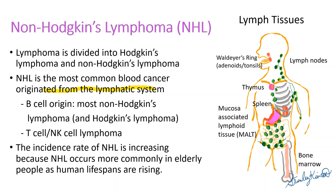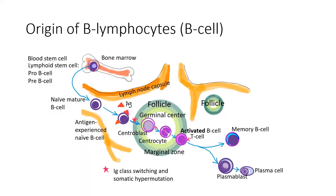Non-Hodgkin's lymphoma is originated from the lymphatic system. They are either of B cell origin or T cell and NK cell origin. All lymphocytes originated from blood stem cells in the bone marrow. After differentiating into progenitor cells, they leave the bone marrow as naive mature B cells and then enter the lymph nodes.